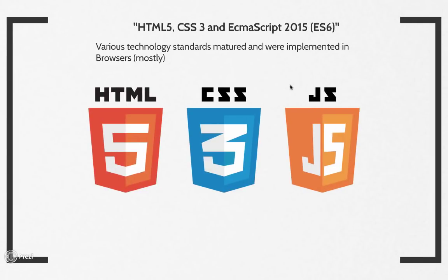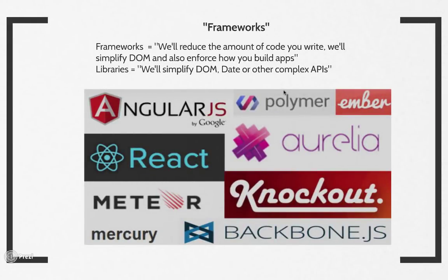In the meantime, various technology standards matured and were implemented across browsers like Chrome, Firefox, and Internet Explorer. Around the same time, frameworks became popular. Frameworks like Backbone.js, Ember, and others said they would reduce the amount of code you write and took control of how you structure your apps. While these frameworks solved many problems in building large and complex apps, they also introduced newer concepts, rules, and constraints, adding lots of complexity. To solve the problems these frameworks created, newer frameworks were being created almost on a weekly — or even daily — basis.